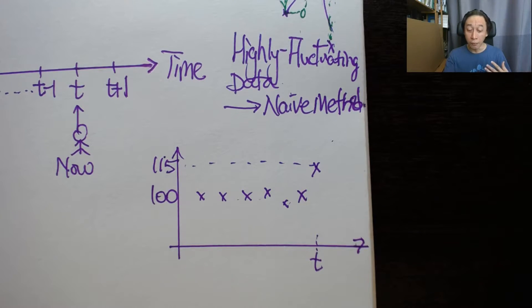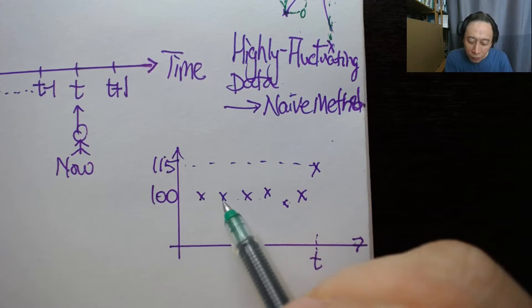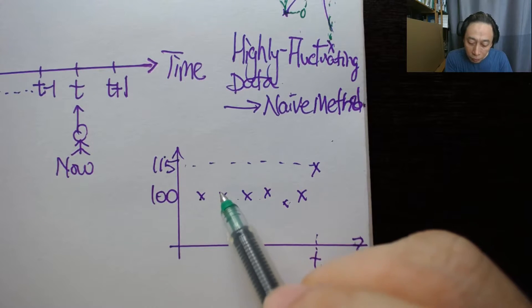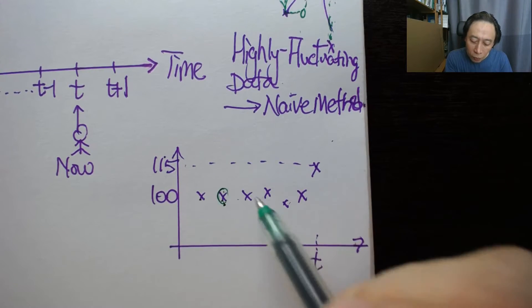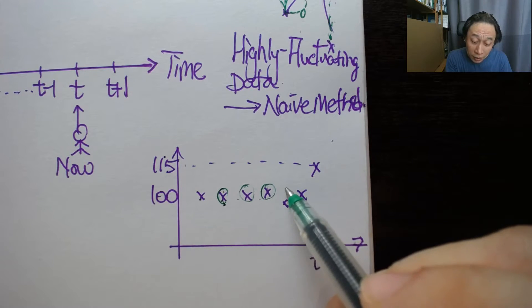In this case, beforehand, a priori, we already know that the data pattern is going to be dull, shouldn't be changing that much. And we therefore adopt this algorithm, the averaging method, which has built into it the DNA that data doesn't change much. So if we do that, then our forecast for next year in this case will be 100 tons.